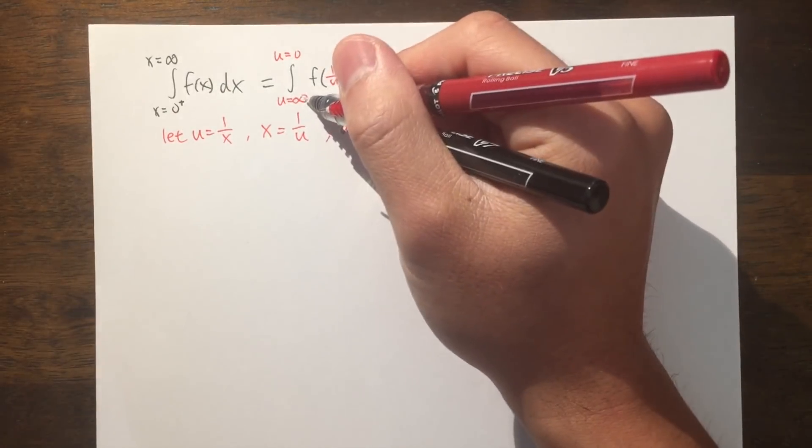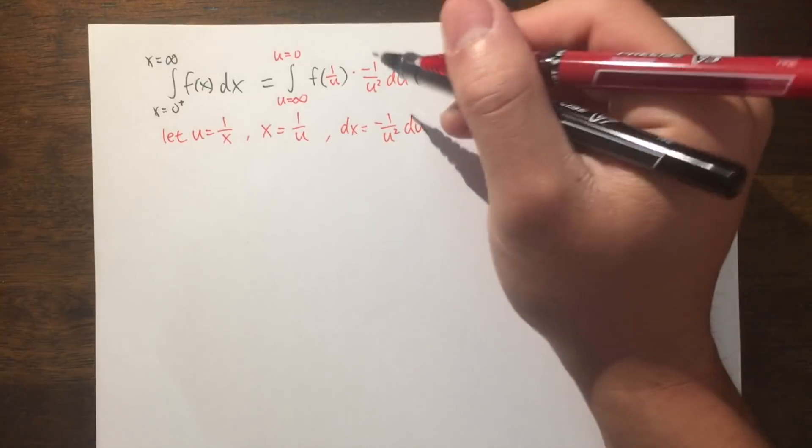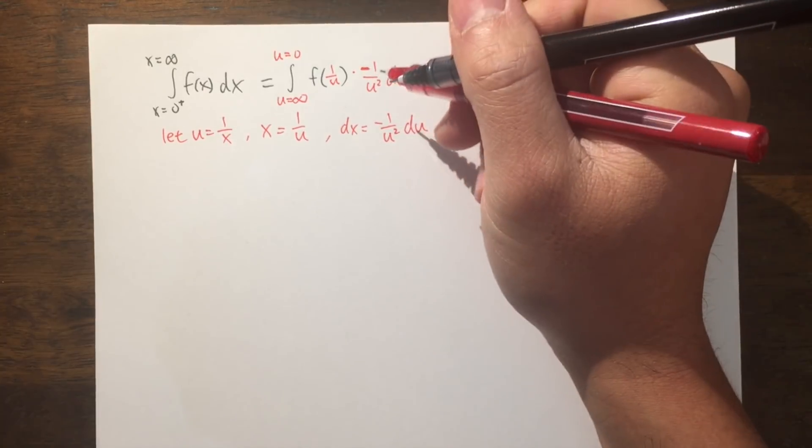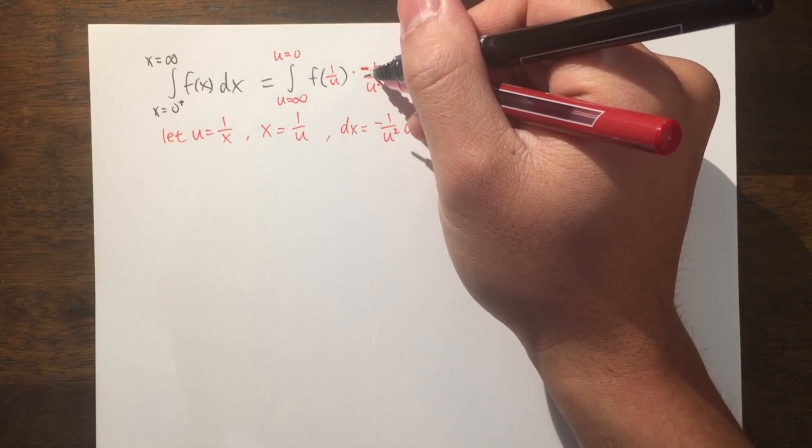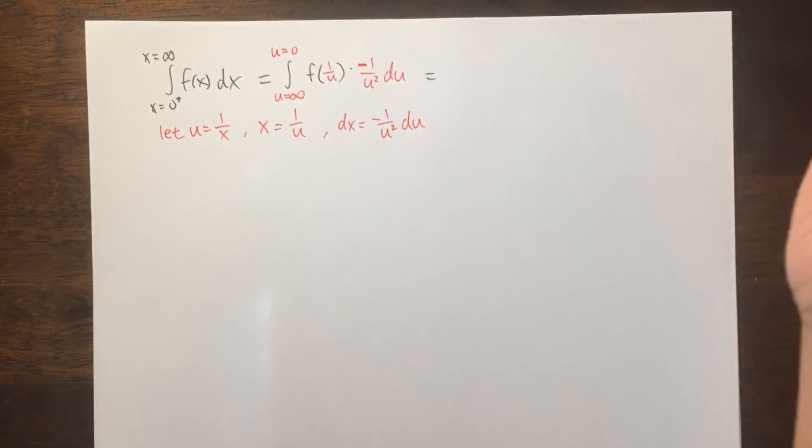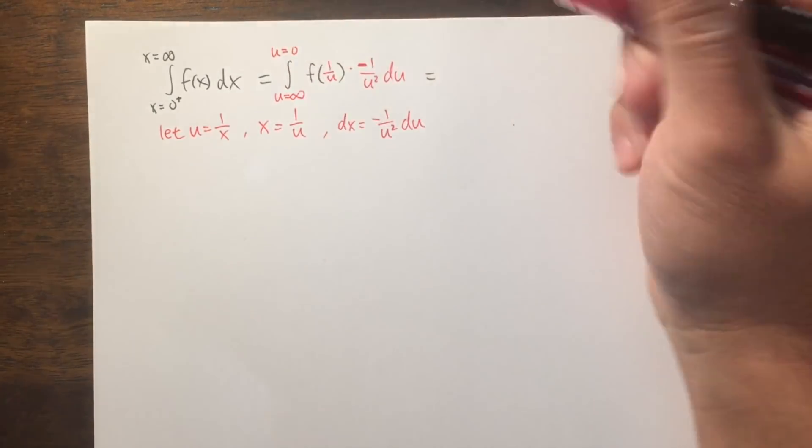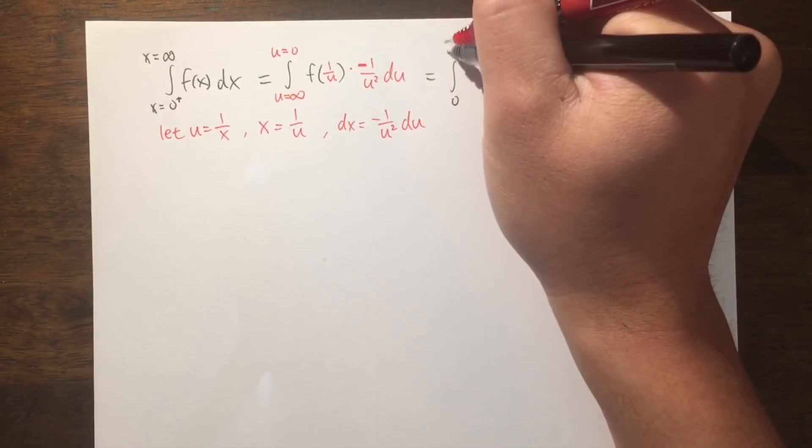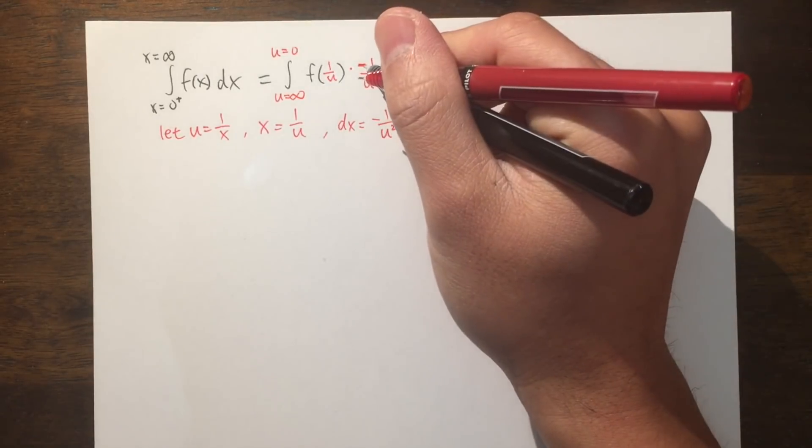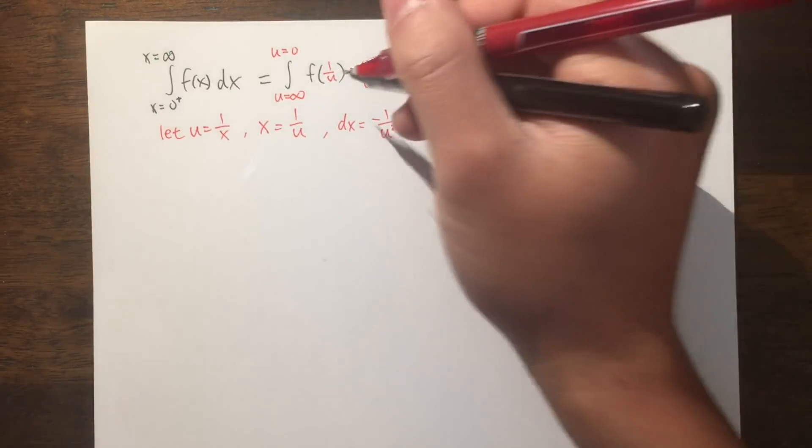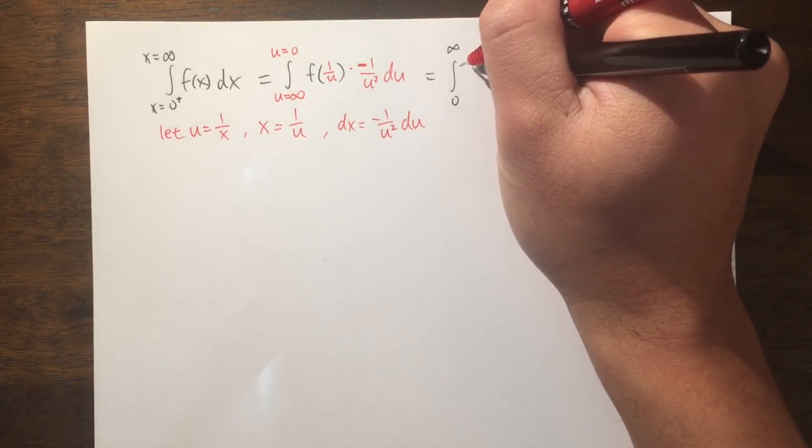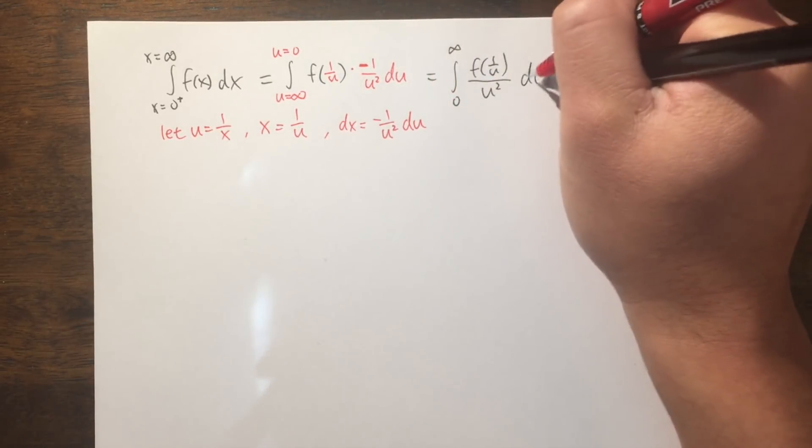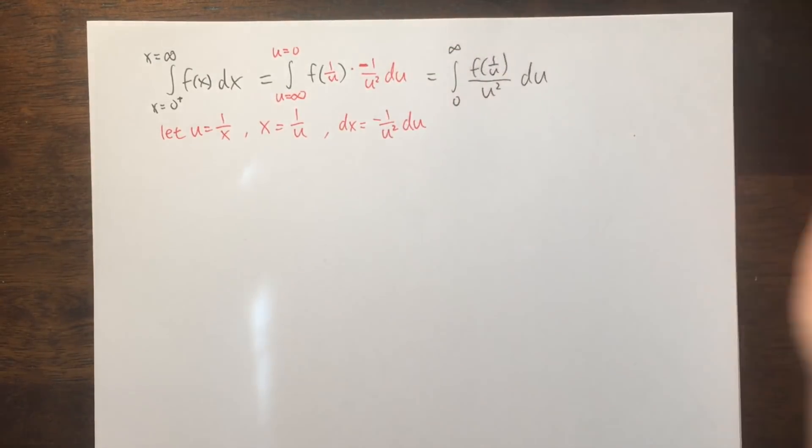Notice that we have this integral going from infinity to 0, which is kind of out of order. But thanks to this negative, and by one of the properties of integrals, when we have the negative of the integral, we can just switch the limits of integration. So in other words, this is actually the same as the integral from 0 to infinity with no more negative. The negative helps us turn this around. The integrand is f(1/u) over u squared, and then this is du.